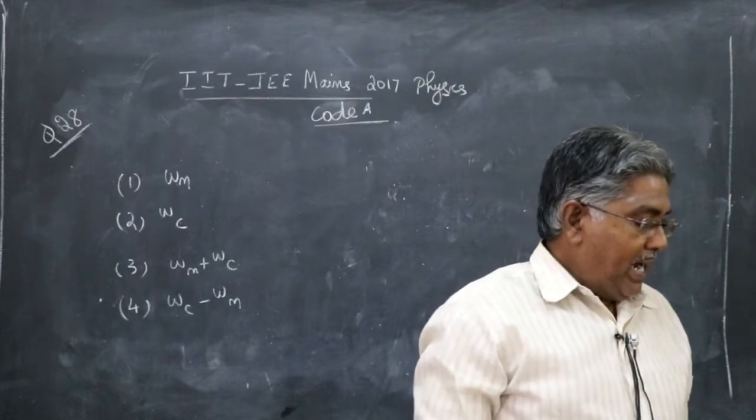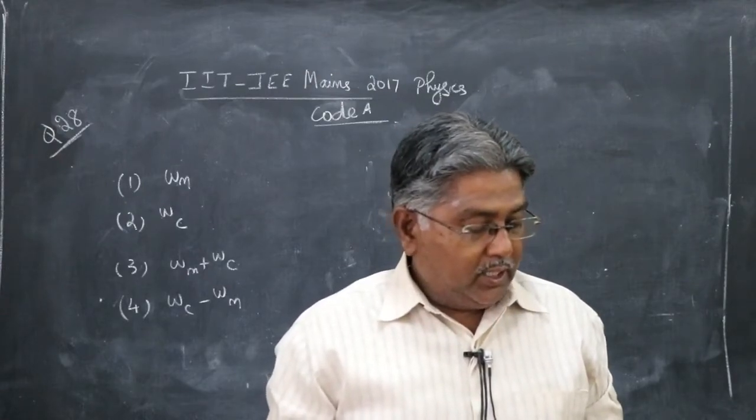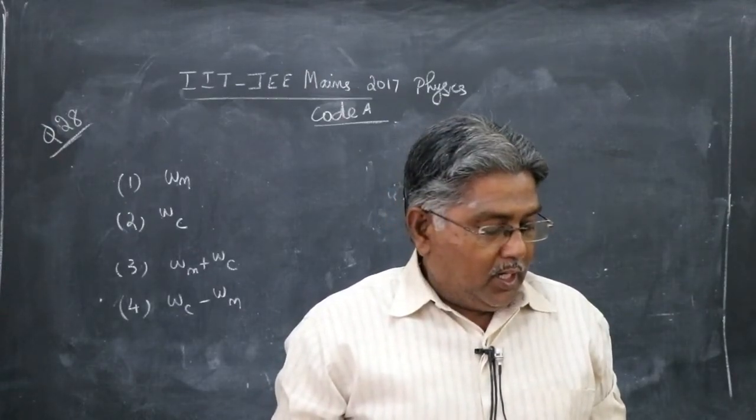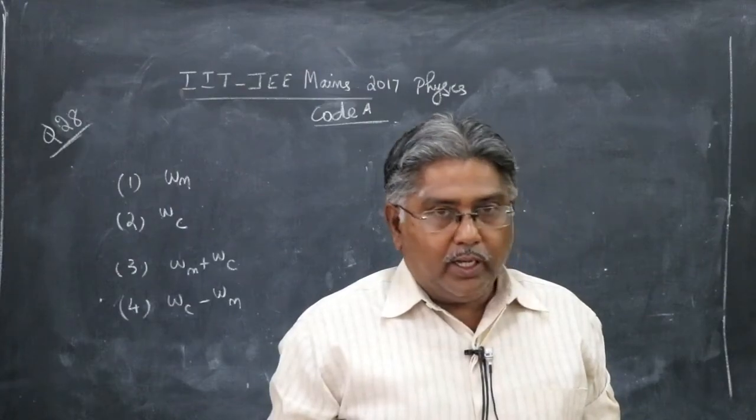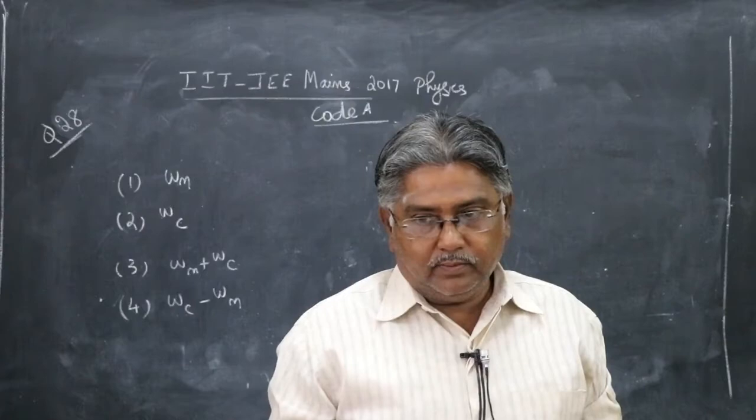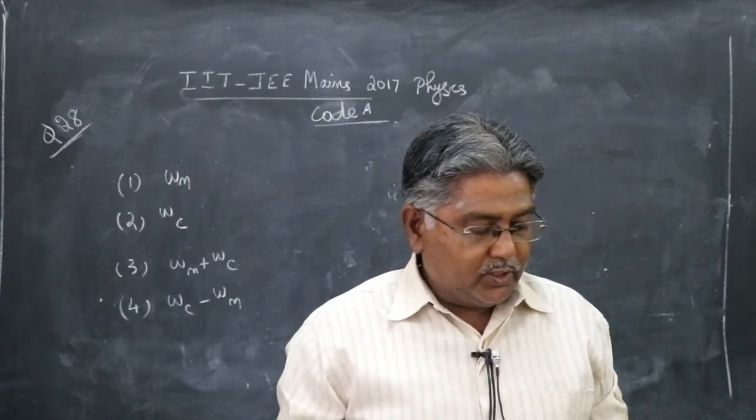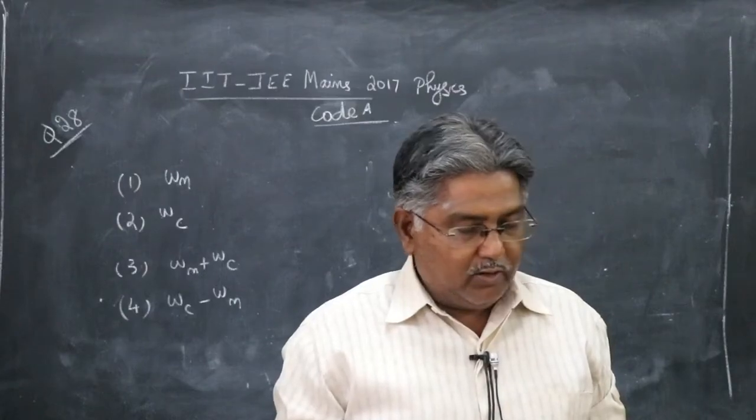The bandwidth delta omega m of the signal is such that delta omega m is less than omega c. Which of the following frequencies is not contained in the modulated wave?